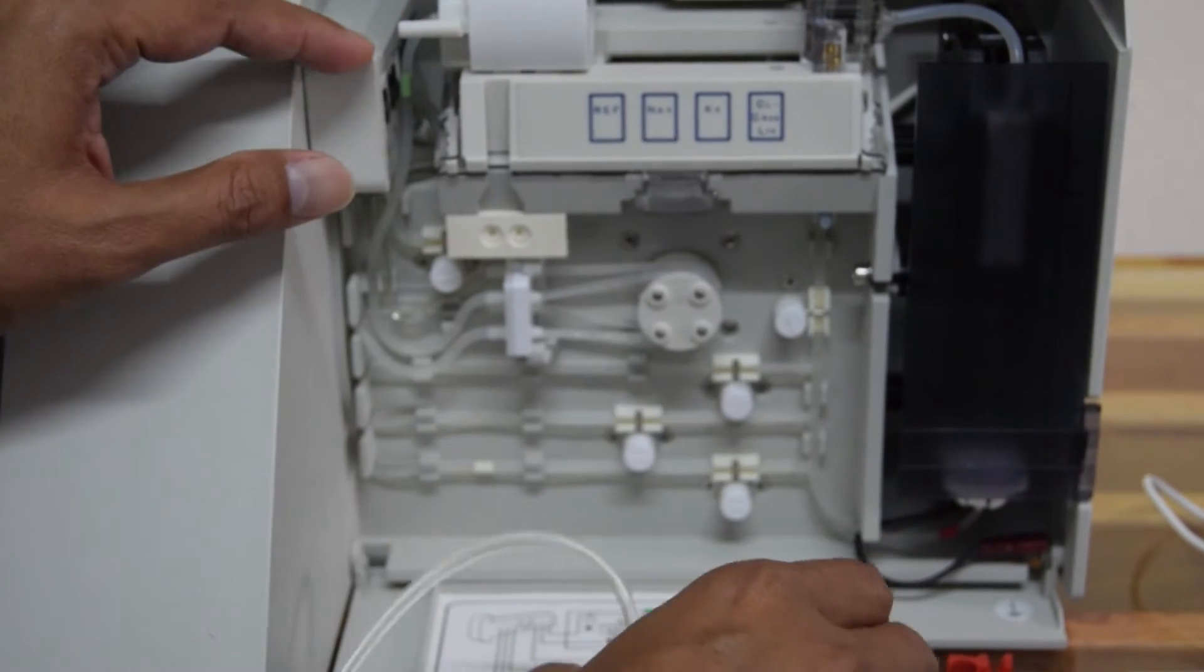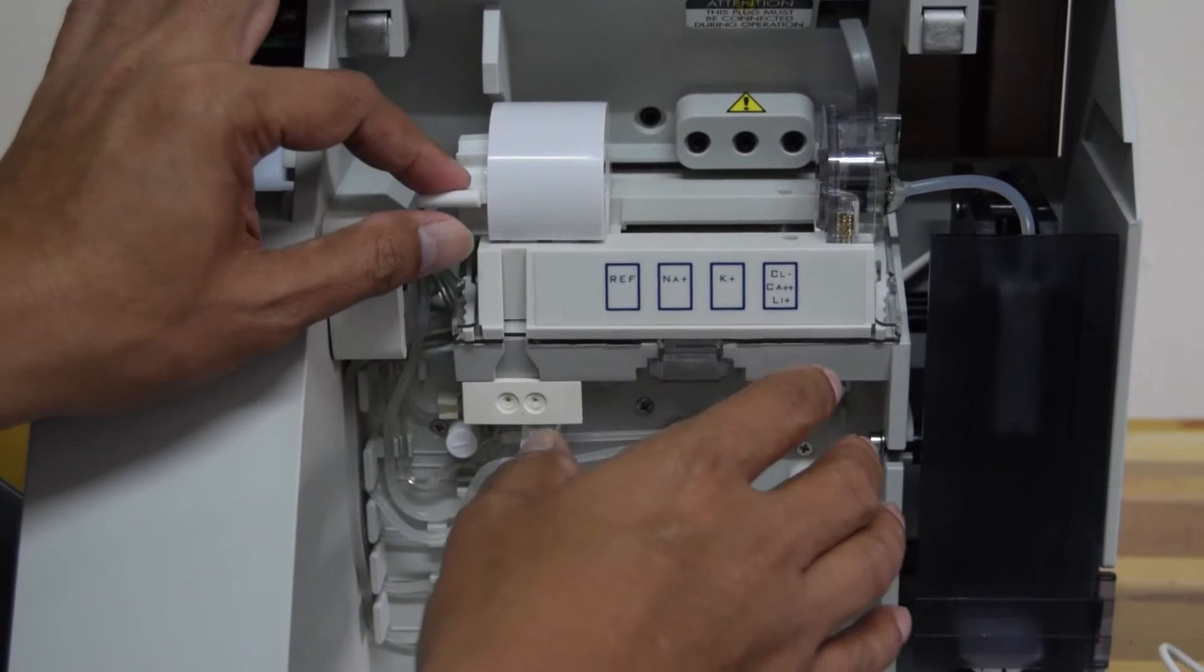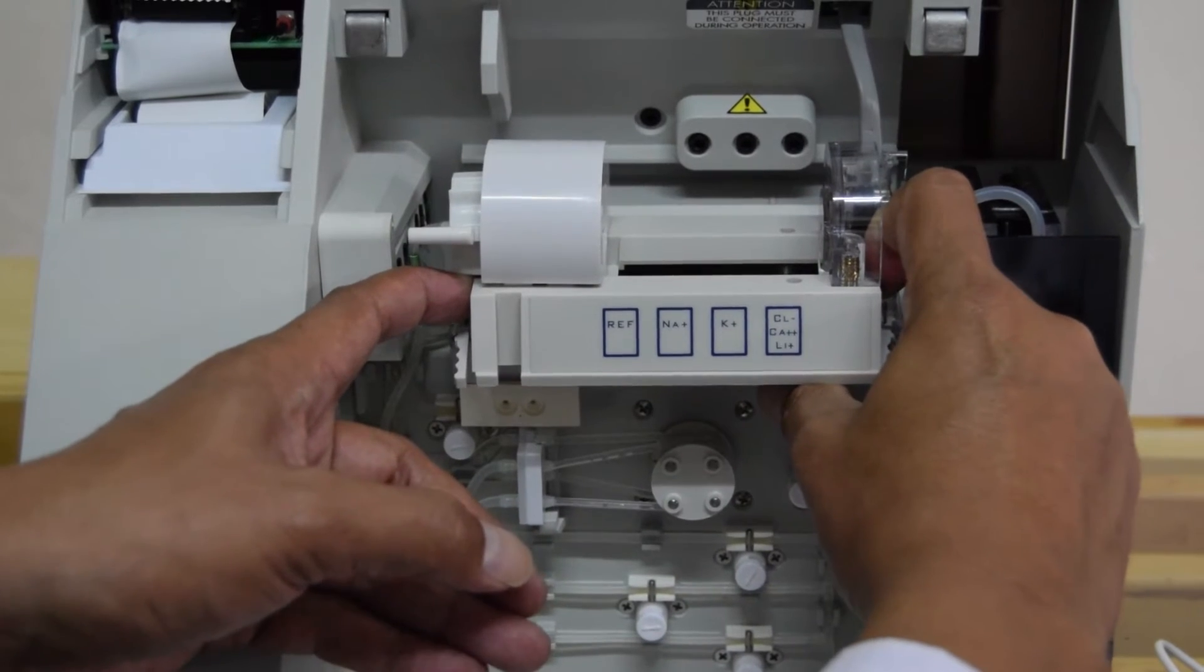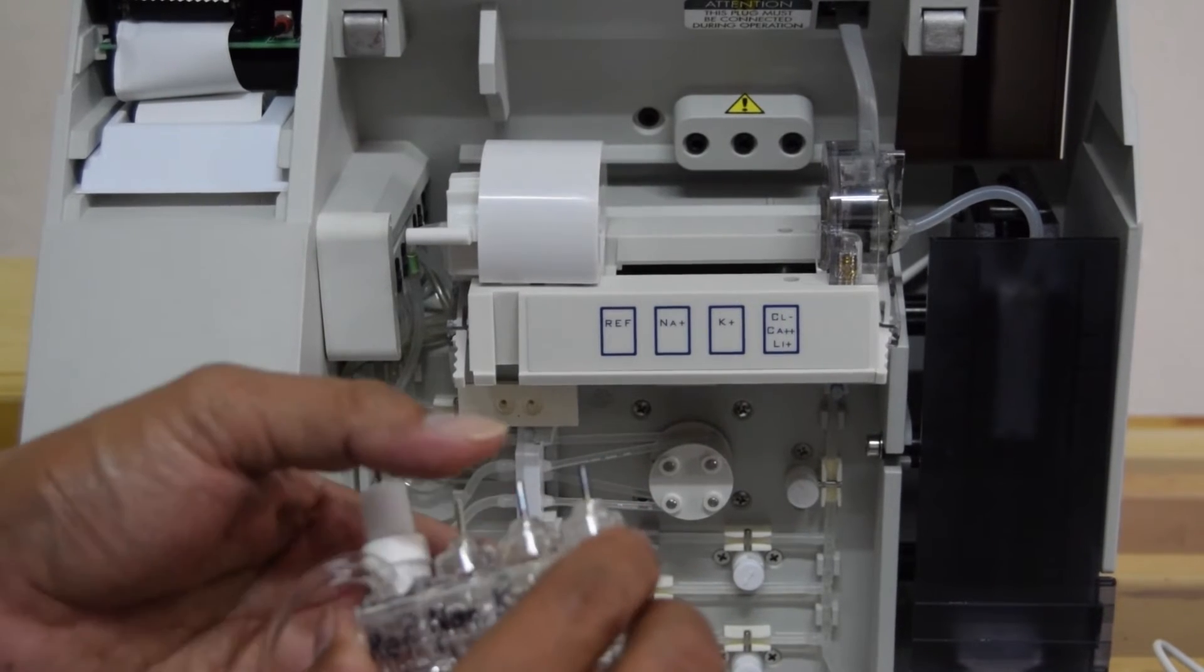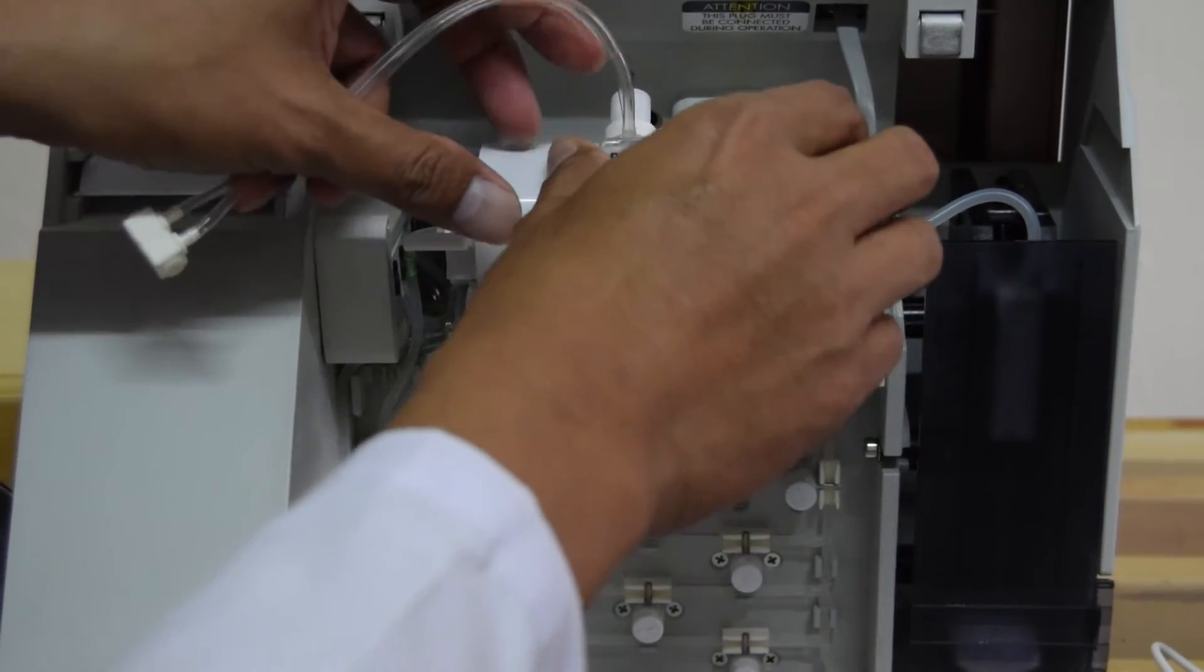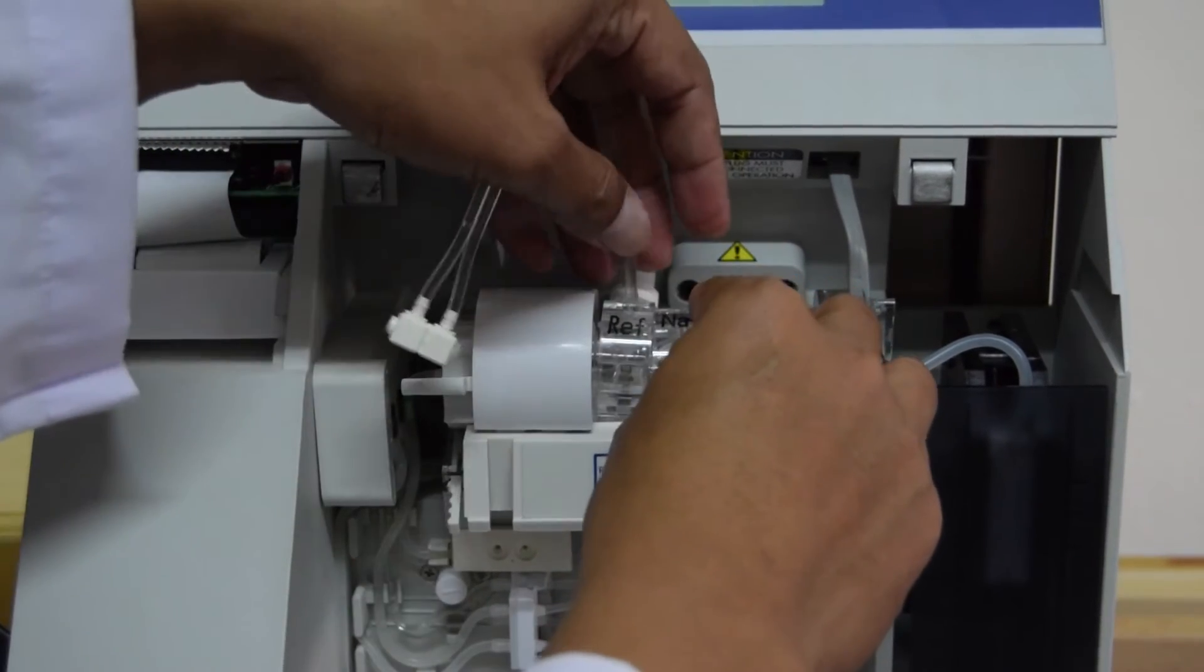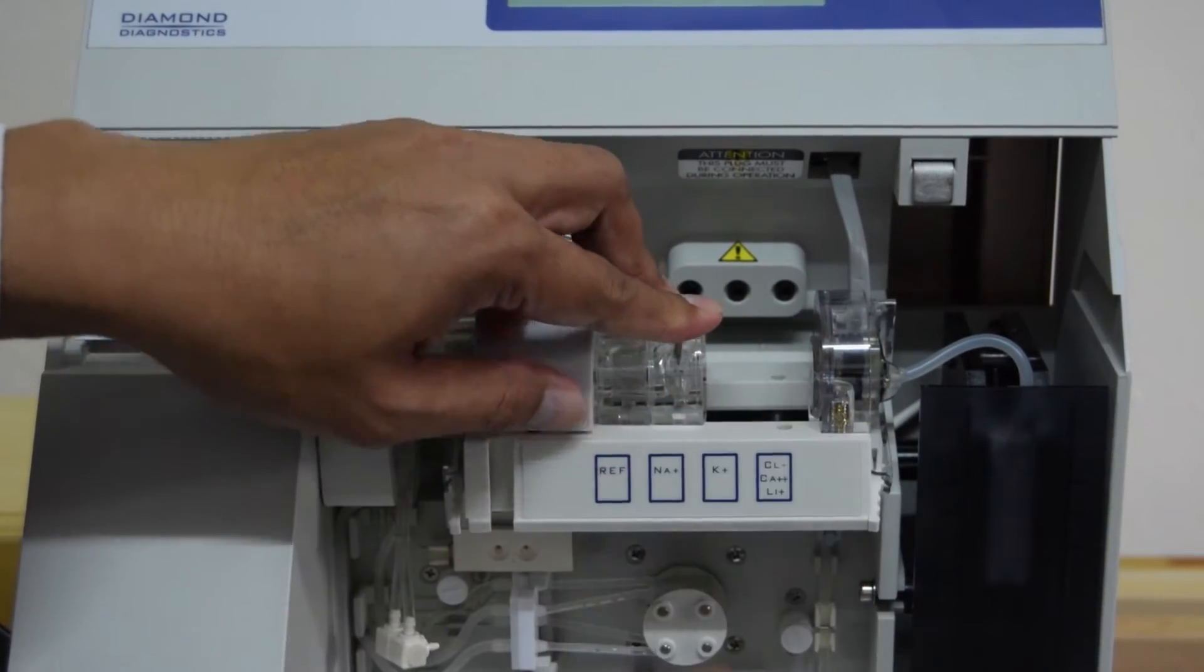Pertama-tama adalah, menarik atau melepas seperti ini. Jepitan dari elektroda tray ini. Terus dilanjutkan dengan menarik perlahan. Seperti ini. Dilanjutkan dengan memasang elektroda.